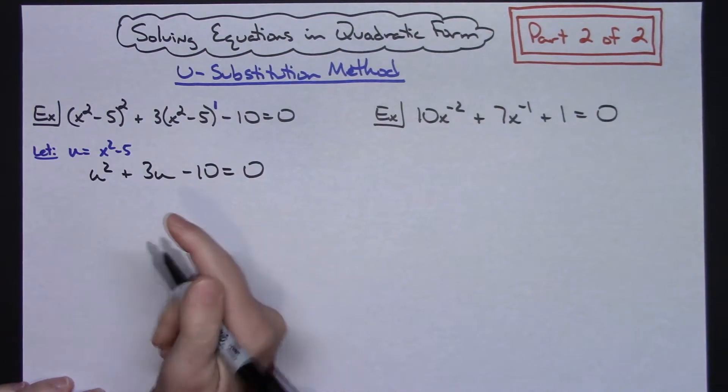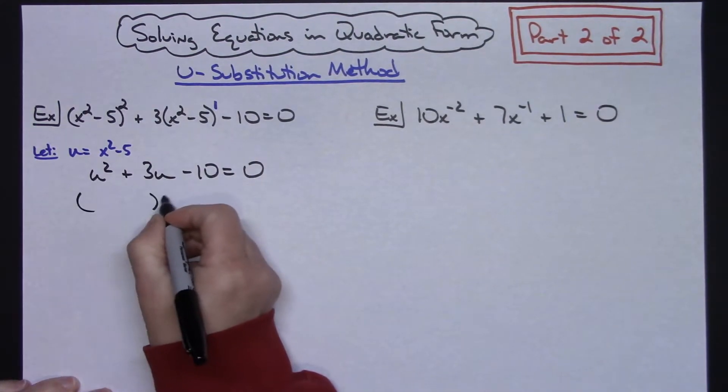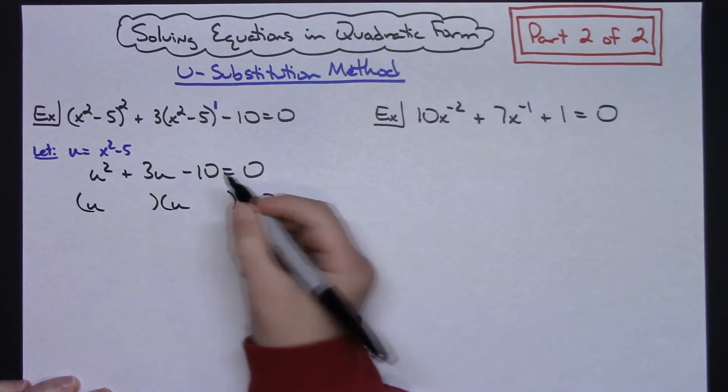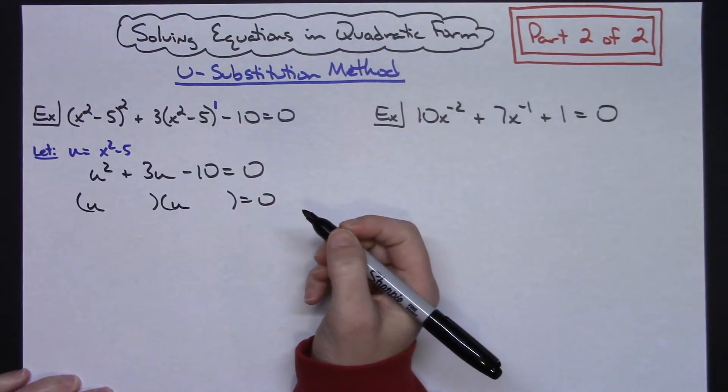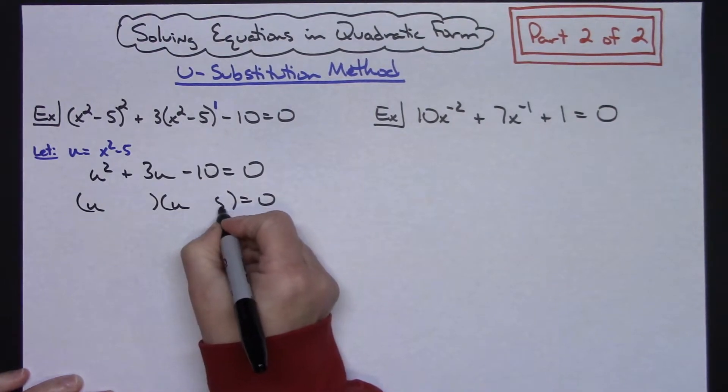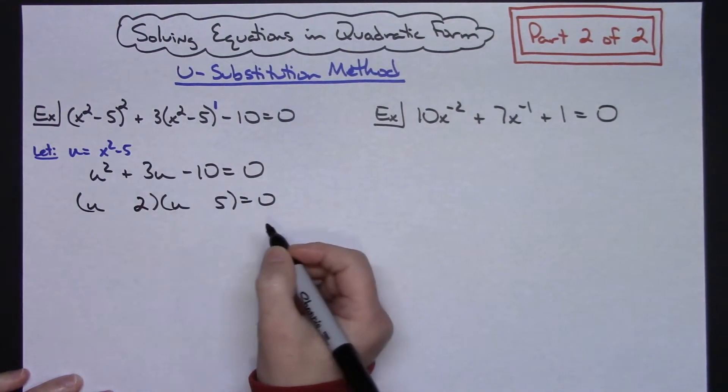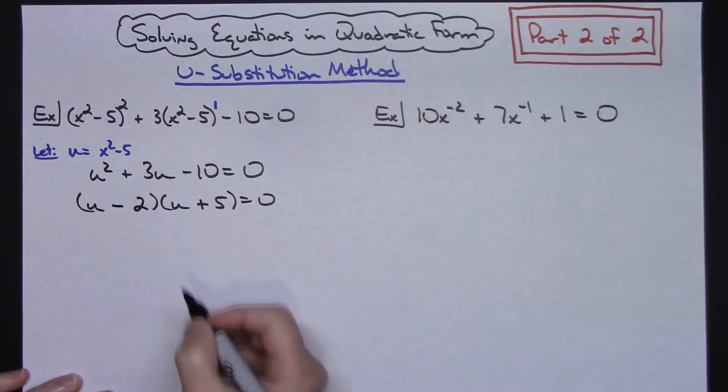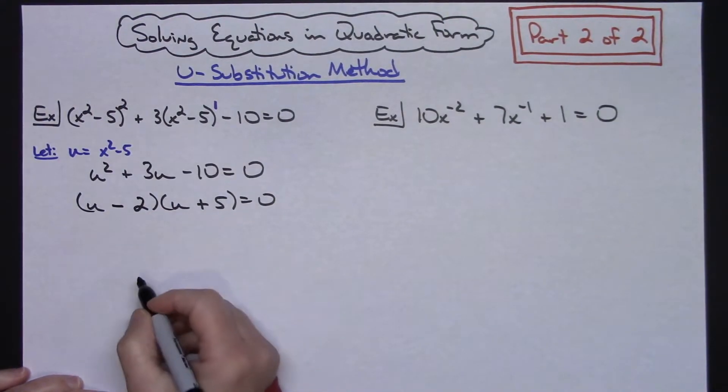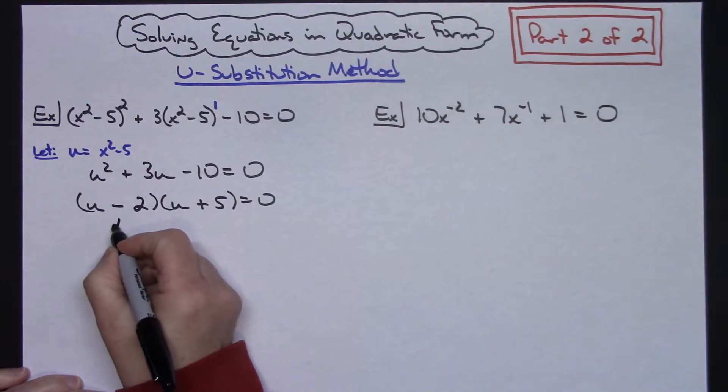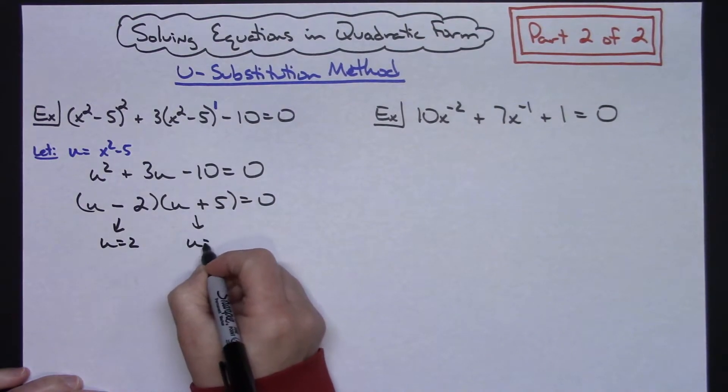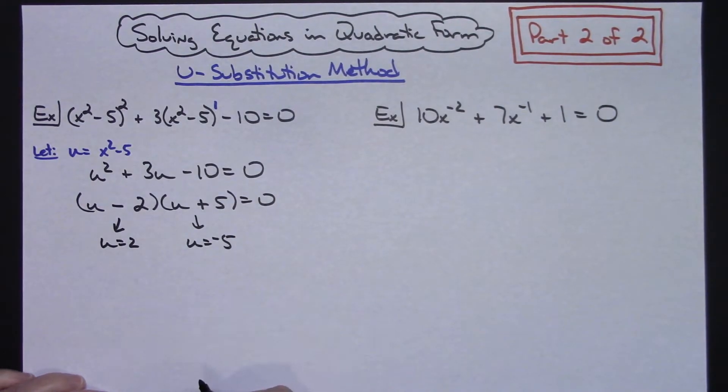Now I am down to a trinomial that factors easily, so we'll guess and check that with a u and a u here. Factors of 10 that give me a 3 in the middle would be 5 and 2. I need that 3 to be positive, so let's put the positive with the 5 and the minus with the 2. I've got these two factors. I'm going to set both of them equal to 0. So u equals 2 here and u equals negative 5 here.